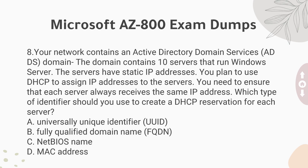Question 8: Your network contains an Active Directory Domain Services (ADDS) domain. The domain contains 10 servers that run Windows Server. The servers have static IP addresses. You plan to use DHCP to assign IP addresses to the servers. You need to ensure that each server always receives the same IP address. Which type of identifier should you use to create a DHCP reservation for each server? A. Universally Unique Identifier. B. Fully Qualified Domain Name (FQDN). C. NetBIOS Name. D. MAC Address.